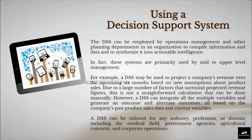For example, a DSS may be used to project a company's revenue over the upcoming six months, based on new assumptions about product sales. Due to the large number of factors that surround projected revenue figures, this is not a straightforward calculation that can be done manually. However, a DSS can integrate all the multiple variables and generate an outcome and alternate outcomes, all based on the company's past product sales data and current variables. A DSS can be tailored for any industry, profession, or domain including the medical field, government agencies, agricultural concerns, and corporate operations.